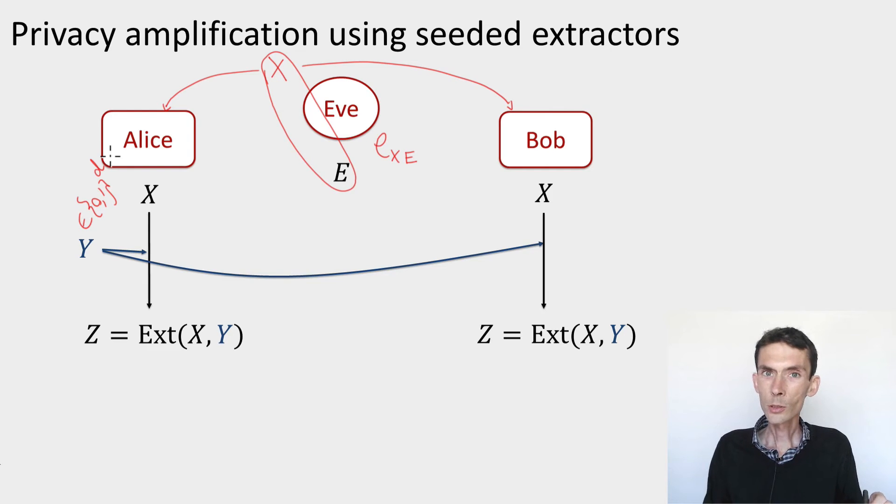So that's one assumption that we need for privacy amplification based on extractors, which is that Alice has a trusted random number generator in her lab. And that random number generator is independent from the eavesdropper's side information about the weak secret that she holds initially. So Y should be uniform and independent of E.